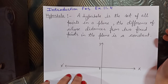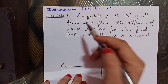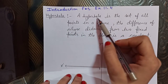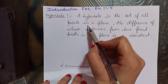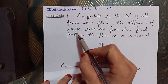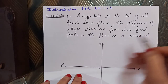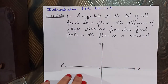Hello students, today we start Class 11 Math Chapter 11 Conic Section introduction for Exercise 11.4. Our concept is hyperbola. A hyperbola is the set of all points in a plane, the difference of whose distances from two fixed points in the plane is a constant.